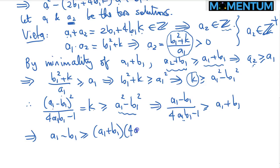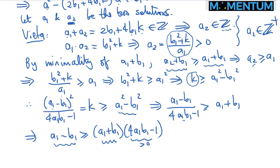After further cross-multiplication — since A₁B₁ is positive — we get A₁ minus B₁ is greater than or equal to A₁ plus B₁ times 4 times A₁B₁ minus 1. But this is greater than 0, and for two strictly positive integers, their sum must be strictly greater than their difference. So we get the desired contradiction.